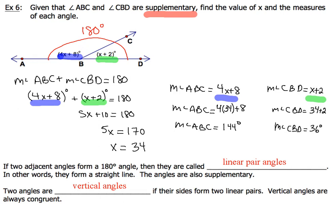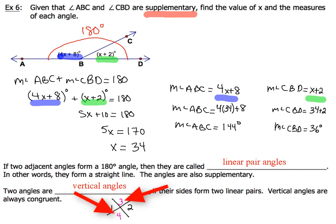Vertical angles are formed when two angles' sides form two linear pairs. Vertical angles are always, always, always congruent. In our diagram, there are two pairs of vertical angles. The first pair are angles 1 and 2; the second pair are angles 3 and 4. Those are the two pairs of vertical angles formed when two lines or line segments intersect one another. You will get to know vertical angles very well in the chapters ahead.